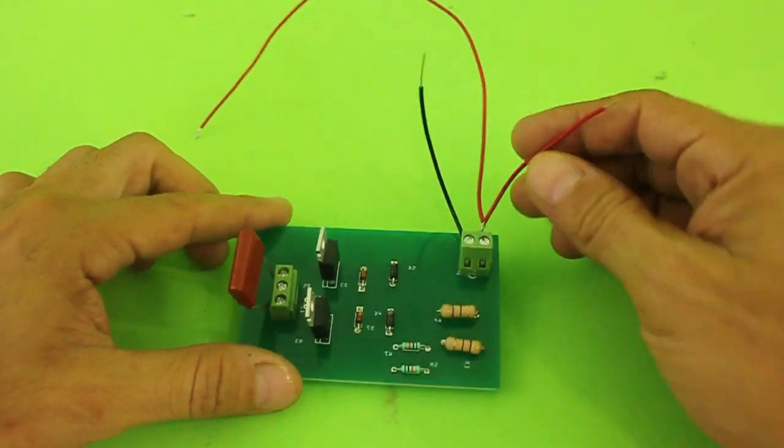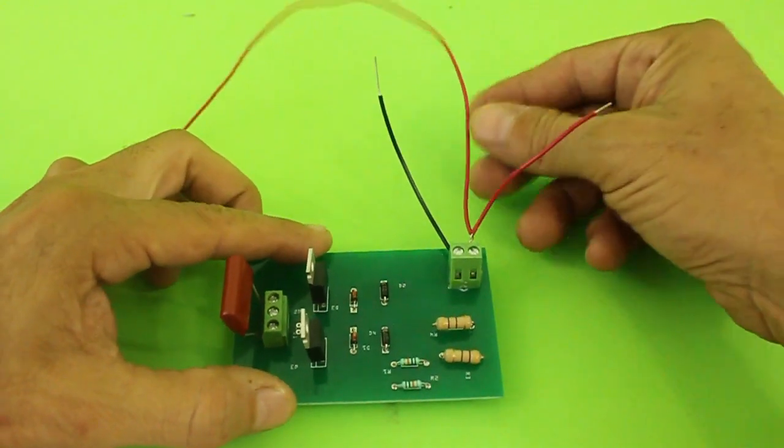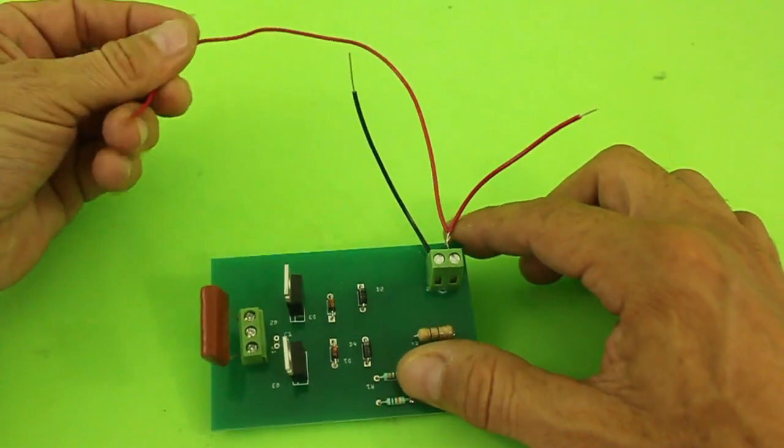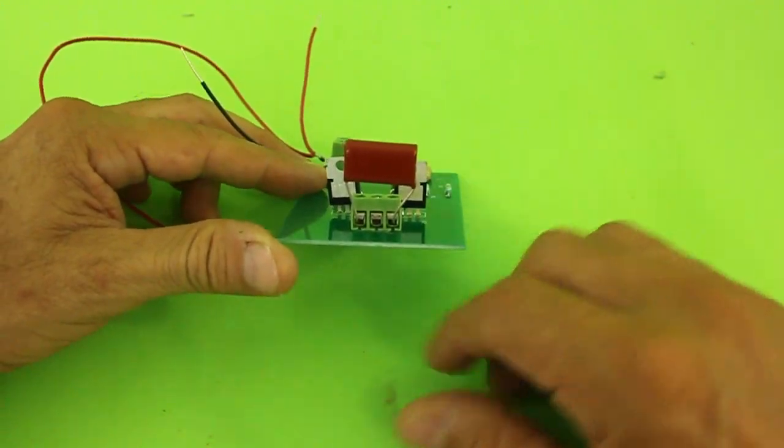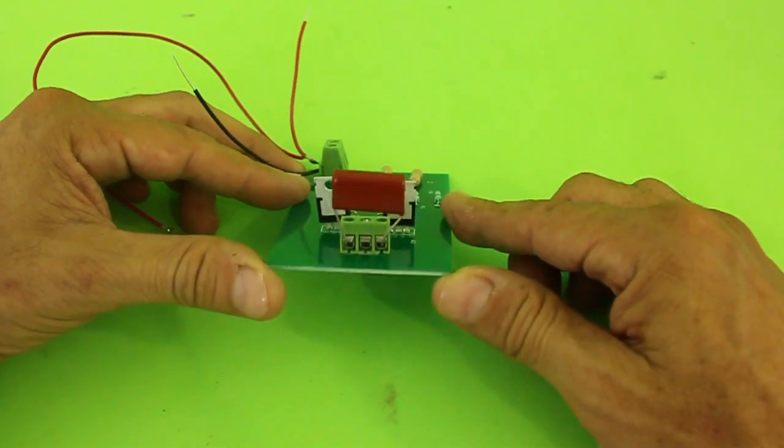These two wires, positive and negative, go to the power supply and this wire from the positive goes to the inductor. The other two wires from the flyback are connected to this connector in the terminals of the capacitor.